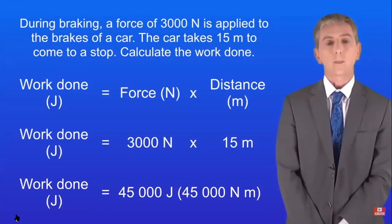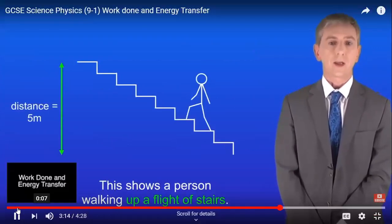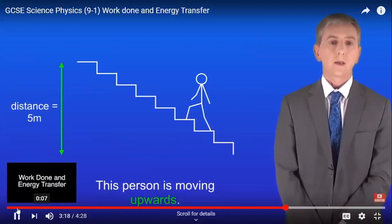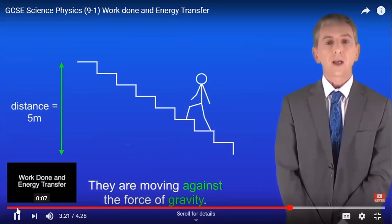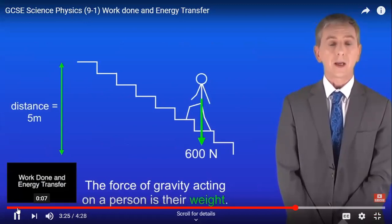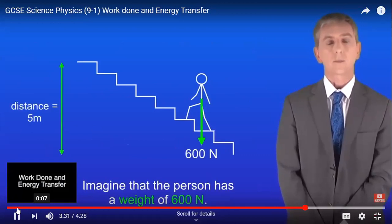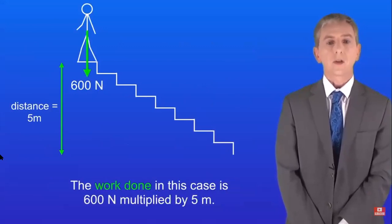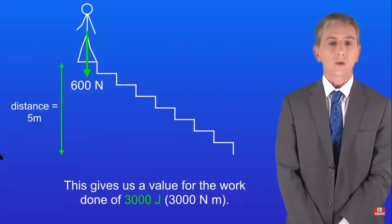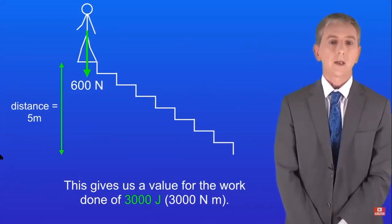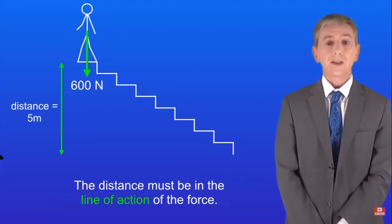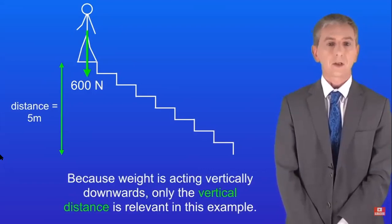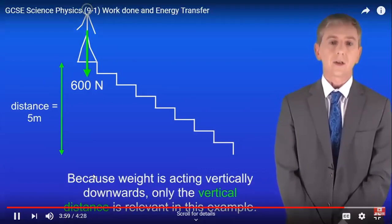Now one final example: a person walking up a flight of stairs. The person is moving upwards — against the force of gravity. The force of gravity acting on a person is their weight. Imagine the person has a weight of 600 newtons. At the top of the stairs they have moved a vertical distance of 5 metres. Work done equals 600 newtons times 5 metres, giving 3,000 joules. Key point: the distance must be in the line of action of the force — because weight acts vertically downwards, only the vertical distance is relevant.